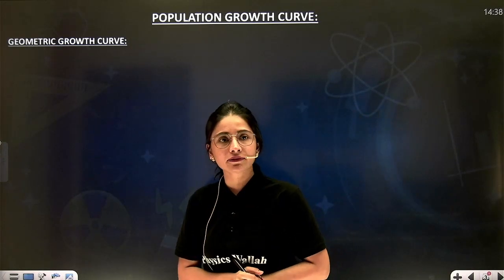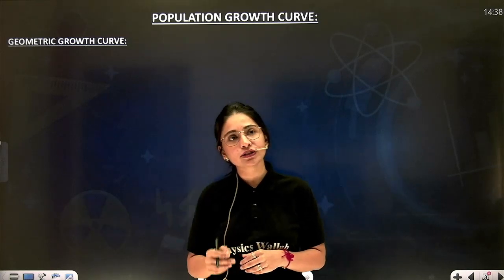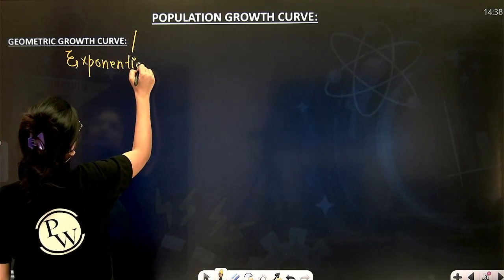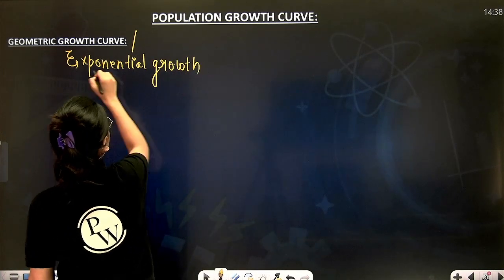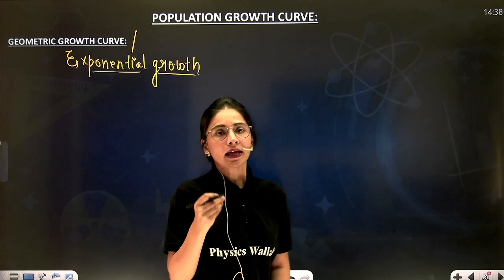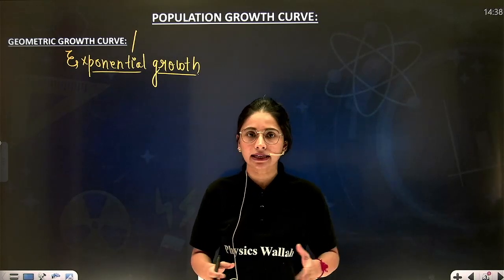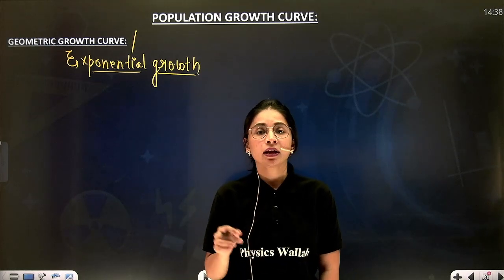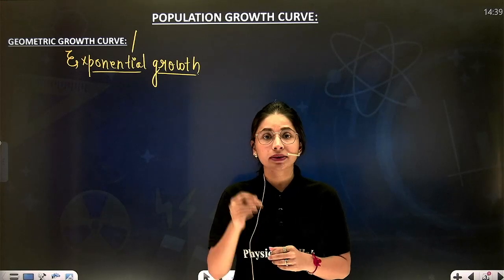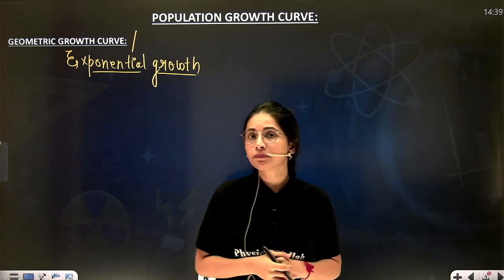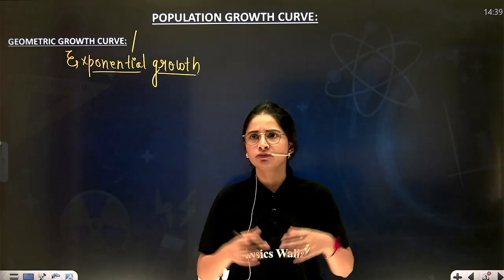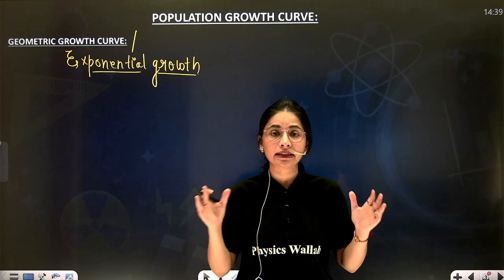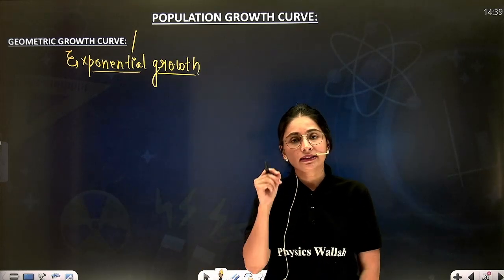There are two types of growth curves which you have to study. The first is the geometric growth curve, which is also known as exponential growth curve. This growth curve basically does not exist in realistic conditions. This type of excessive growth in population density is only seen when all the surrounding conditions for any organism are absolutely perfect — meaning when the amount of nutrients, environment, and temperature given to the organism are all perfect.